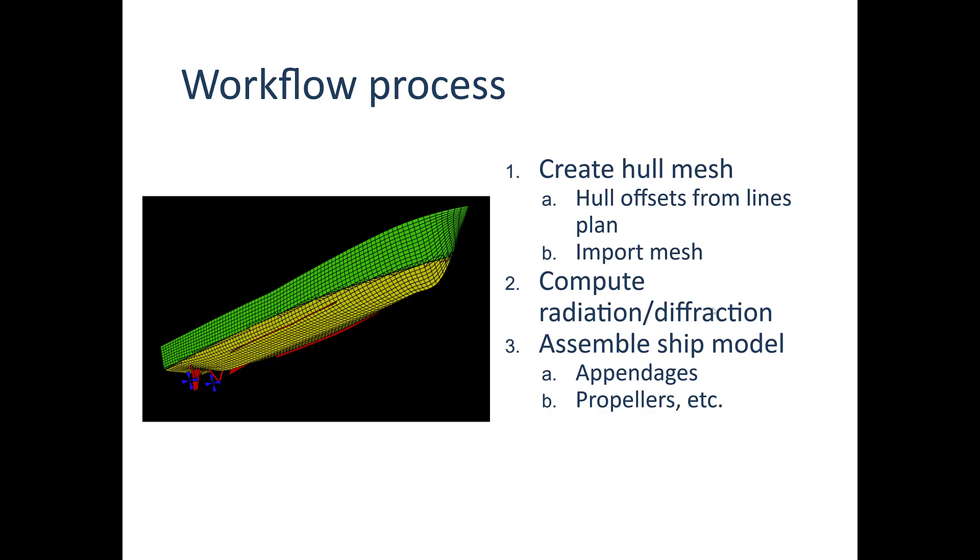The workflow process very generally looks like you create a hull mesh of the vessel. This hull mesh you generate either from hull offsets from a lines plan, or you can import a mesh that's been created in another tool, perhaps like Rhino 3D, but there's other tools that you can use. Compute the wave radiation and diffraction effects. This is the most time-consuming part of using Shipmo3D entirely, and really any kind of tool, just because it's very computationally expensive. But, it's a pre-computation step. Finally, you assemble the ship model, and that's when you're adding these viscous model effects like appendages and propellers and things like that. And, you can see the appendages here in red, for example, on this view from BuildShip in Shipmo3D.